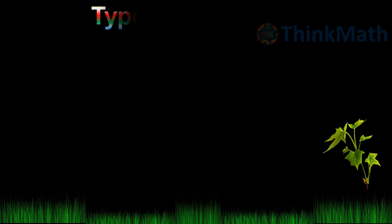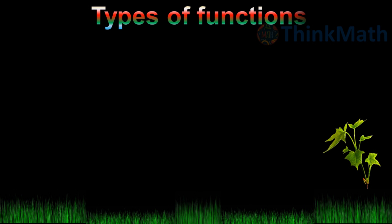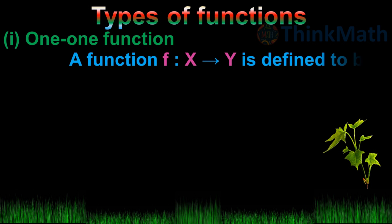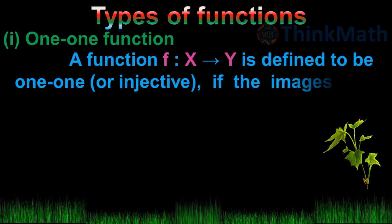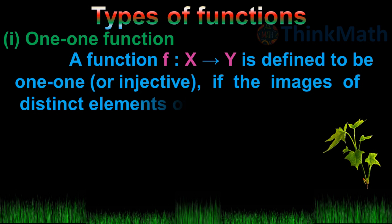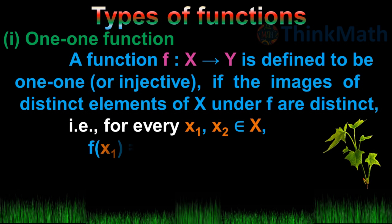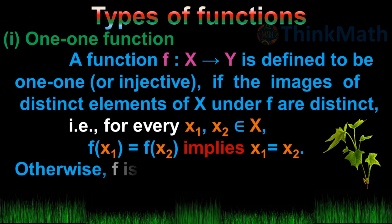One-One Function: A function f from x to y is defined to be one-one or injective if the images of distinct elements of x under f are distinct. That is, for every x1, x2 belonging to x, f(x1) equals f(x2) implies x1 equals x2. Otherwise, f is called a Many-One Function.